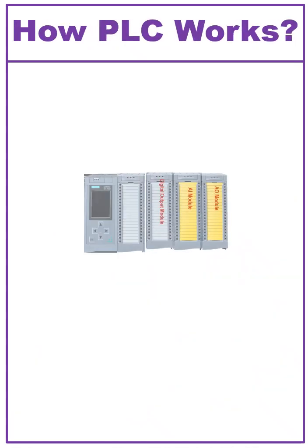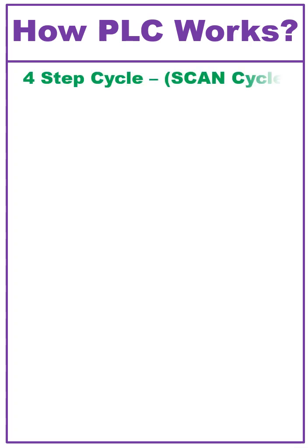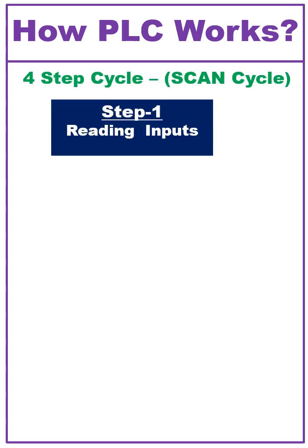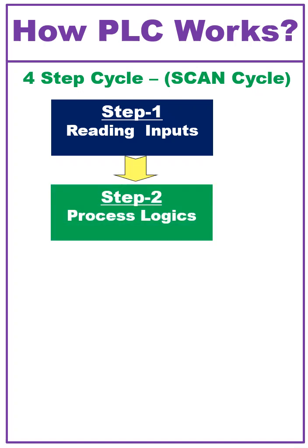How does a PLC work? A typical PLC follows a simple four-step cycle. Step 1: Reading Inputs. It reads the status of all input devices, like sensors, switches, valves, push-buttons, pumps, or other process parameters. Step 2: Processing Logic. The CPU runs the logic based on the user-written program stored in its memory.